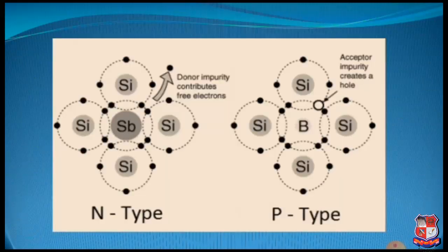Here you can see the picture of N-type and P-type semiconductor. In N-type semiconductor, antimony surrounds the pure silicon semiconductor, where the donor impurity contributes free electrons. On the other hand, for P-type silicon semiconductor, we are adding boron as an impurity, so we have an excess number of holes.